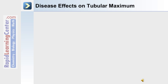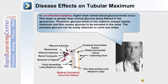Certain diseases can affect what's known as tubular maximum. For example, in uncontrolled diabetes, higher than normal blood glucose levels occur. This leads to greater than normal glucose being filtered in the glomerulus. Therefore, the glucose levels in the nephron exceed the tubular maximum — that's the maximum reabsorption rate — and this causes glucose to be excreted out of the body in the urine. The excreted glucose can be easily detected on urine test strips.